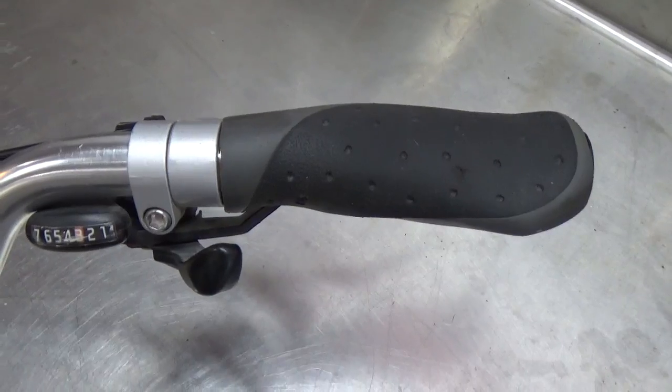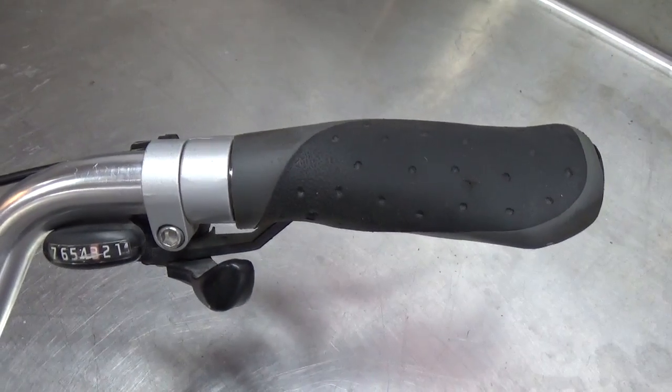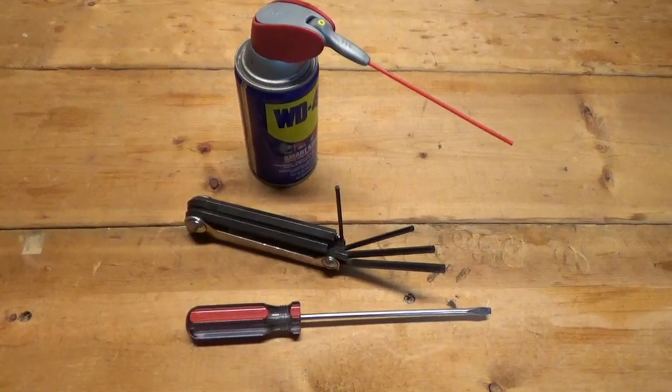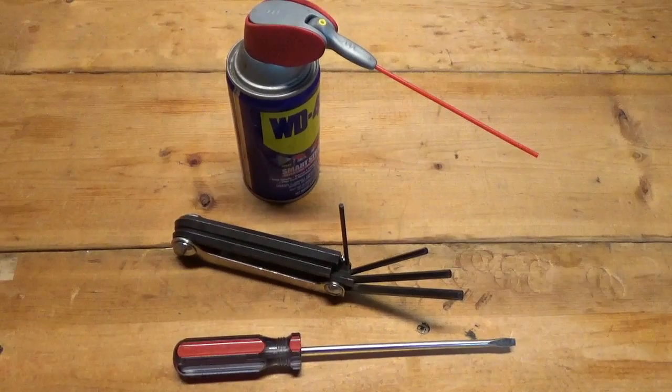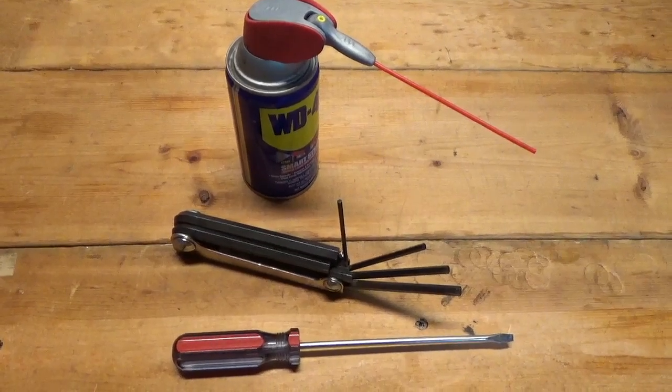When removing bicycle grips you will need the following: a can of aerosol lubricant with a straw nozzle, bike wrenches that fit the handlebar components, and a long flathead screwdriver.